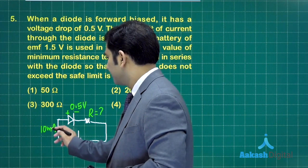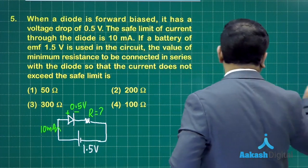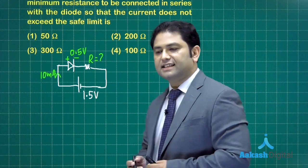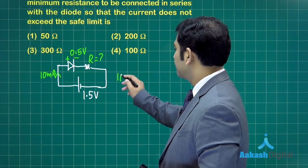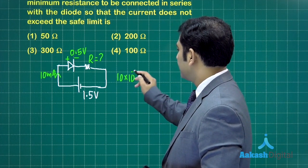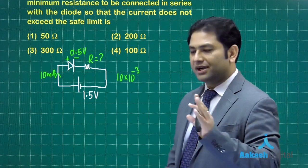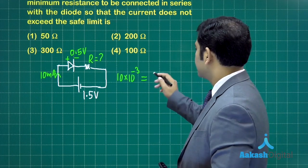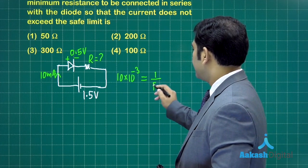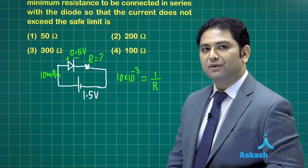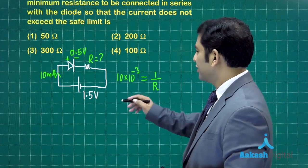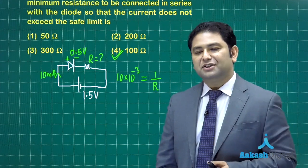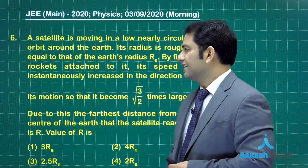The current is 10 milliampere, so that's going to be 10 times 10 raised to the power minus 3, or 0.01 ampere. The potential difference is 1 divided by resistance, so the value of resistance is 100 ohm. So option number 4, that's the correct one.